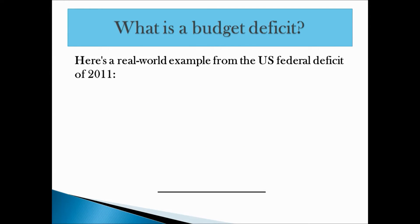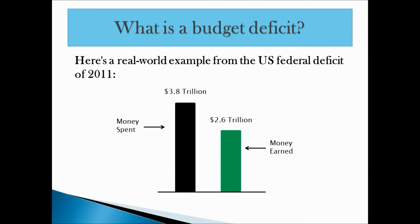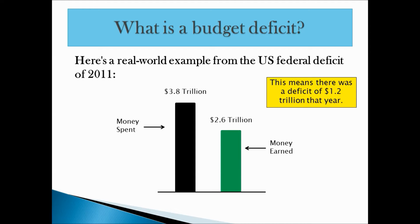Here's a real example of a budget deficit from 2011. In 2011, the United States government paid out $3.8 trillion — that's the money that they spent. However, when you look at the taxes and the other things that they received, it was only $2.6 trillion — that's the money earned. If you do the quick math, you'll realize that in 2011, the United States government had a budget deficit of $1.2 trillion in just that year. So budget deficits are when you have more money going out than you have coming in.